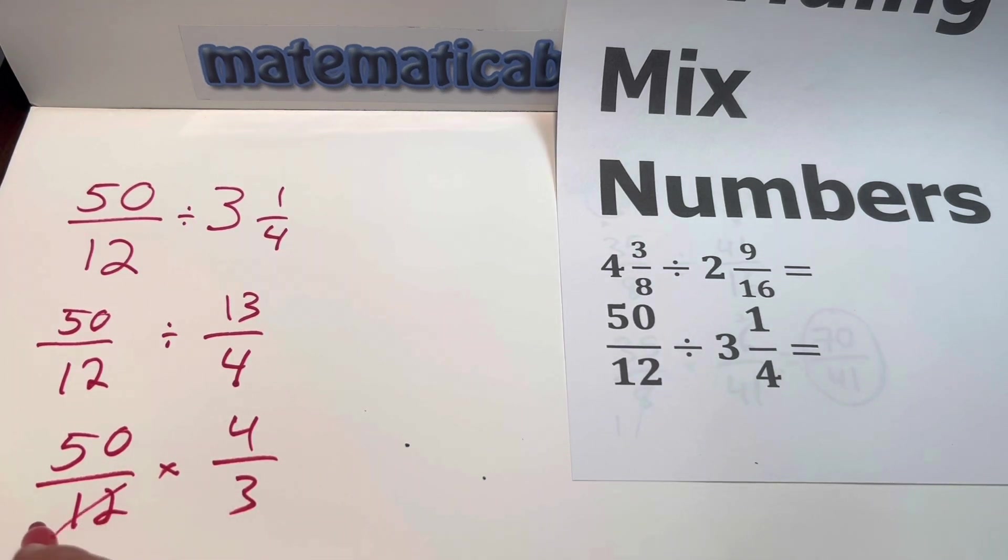12 divided by 4 is 3. 4 divided by 4 is 1. 3 times 3 is 9, 9 on the bottom. 50 times 1 is 50, 50 on the top. And that's it. We are already done with our dividing mixed numbers.